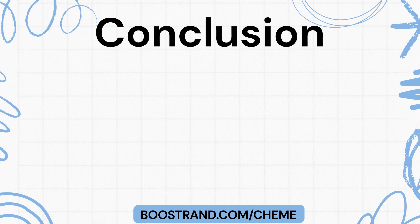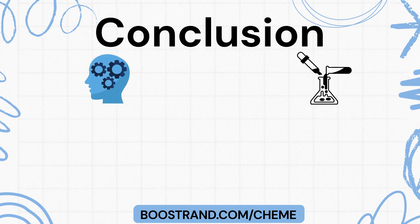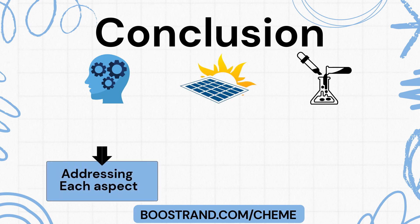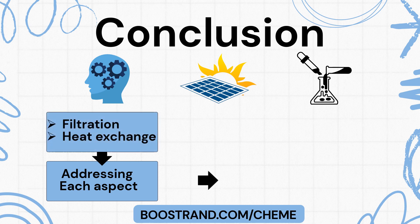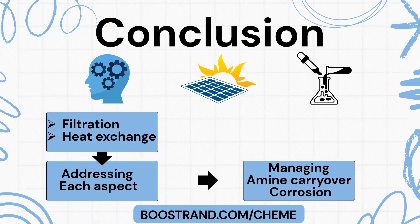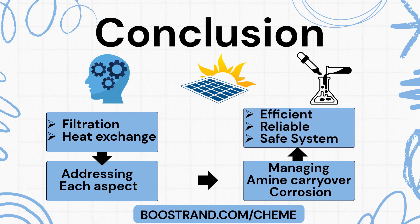The amine gas sweetening process is a complex interplay of chemistry, thermodynamics, and engineering design. By addressing each aspect — from filtration and heat exchange to managing amine carryover and corrosion — engineers can design systems that are efficient, reliable, and safe. Amine gas sweetening plants can thus meet product specifications and environmental regulations, ensuring the natural gas produced is clean and suitable for end-users and downstream applications.